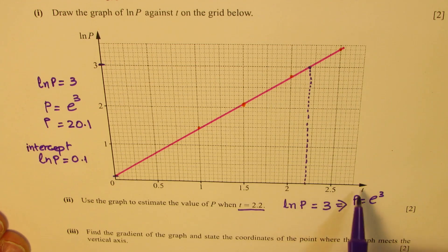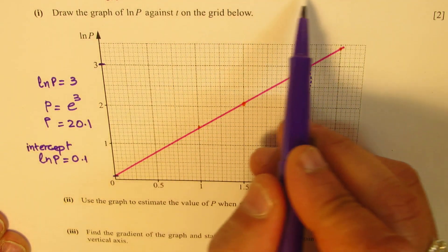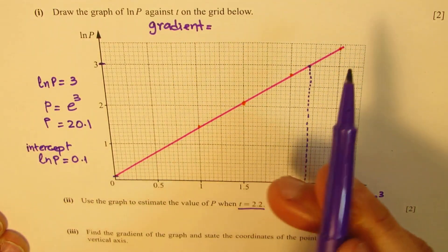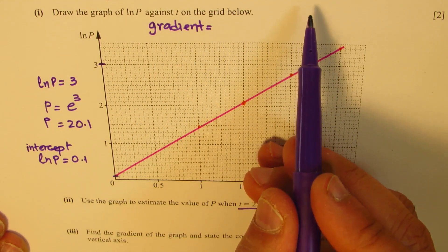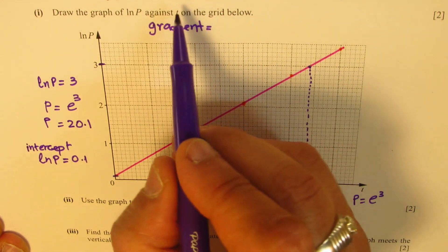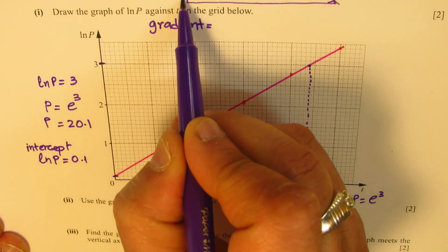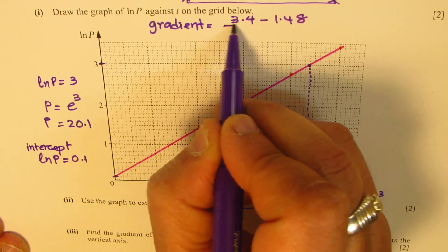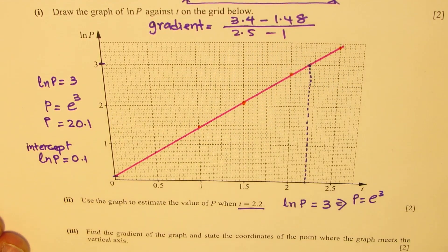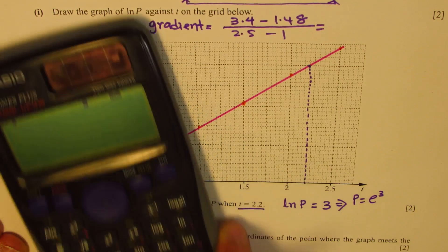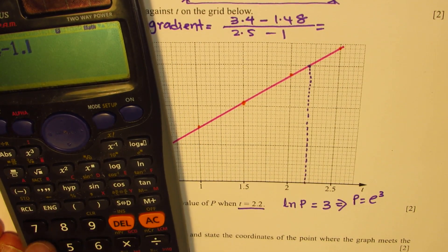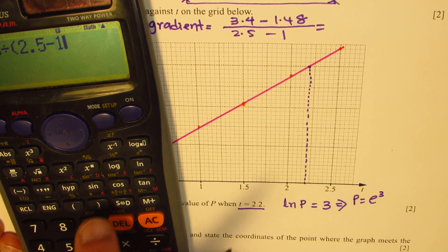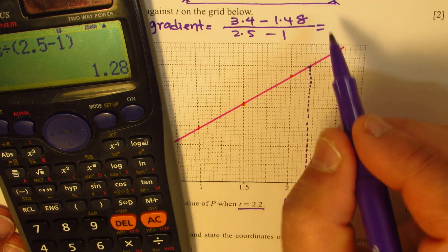For the gradient, we compute change in ln(P) divided by change in T, using the two extreme points: (3.4 − 1.48) ÷ (2.5 − 1). That gives 1.92 ÷ 1.5, and the decimal equivalent is 1.28. So the gradient is 1.28.